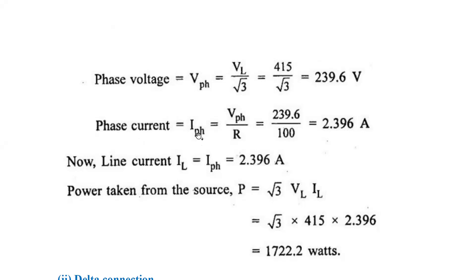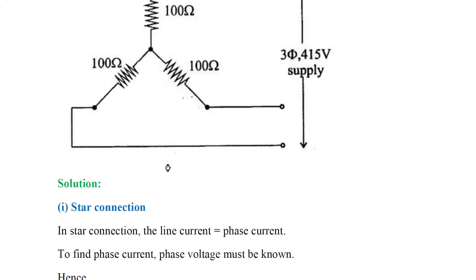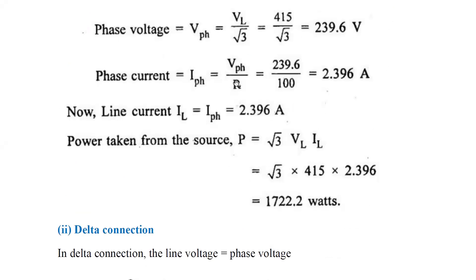The phase current I_phase is equal to V_phase divided by R, which by Ohm's law is V over R. V_phase is 239.6 and resistance R is 100 ohms, so 239.6 divided by 100 gives a phase current of 2.396 amperes. Since it's a star connection, line current IL equals phase current, which is also 2.396 amperes.